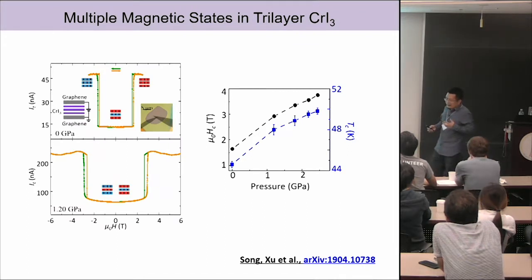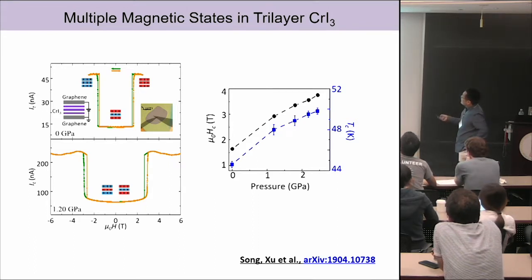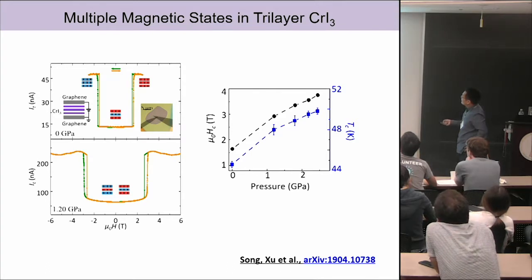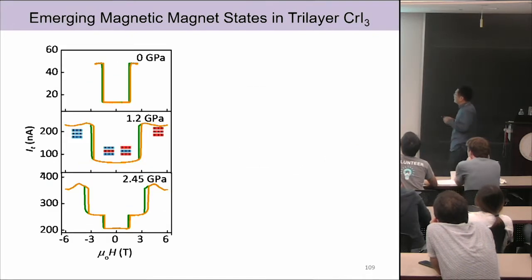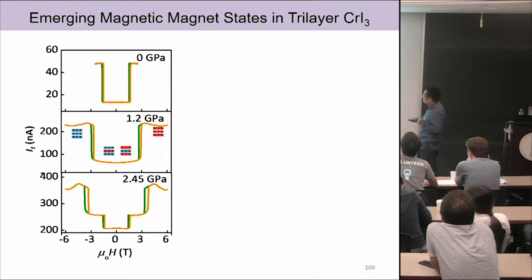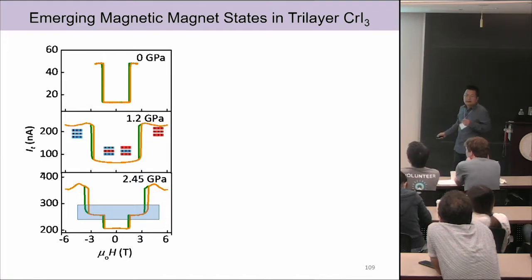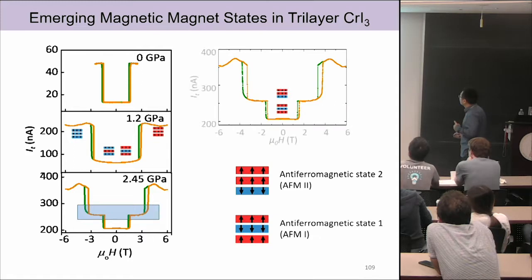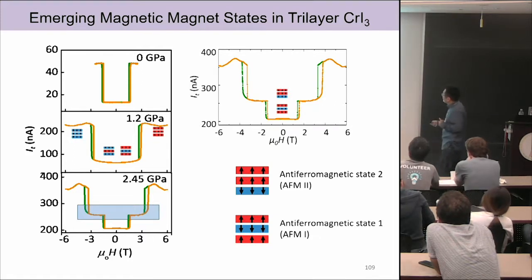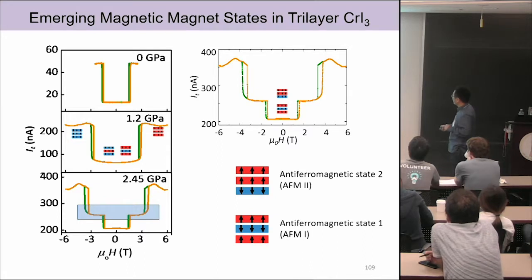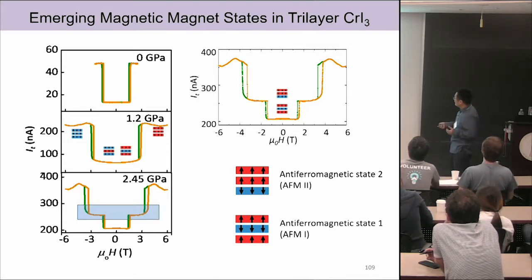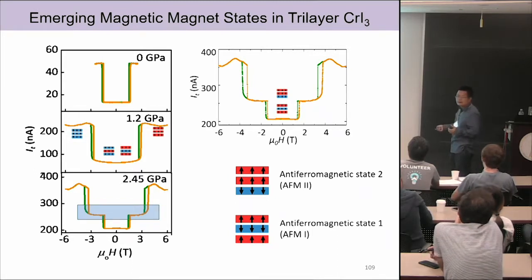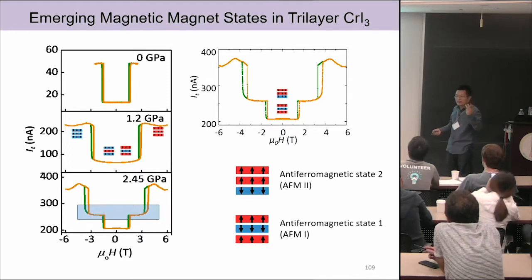In the trilayer, at higher pressures we observe intermediate states appearing — a new magnetic state at higher pressure. This new state comes from another antiferromagnetic configuration. I define two types of antiferromagnetic states: AF1 is the one I already described, with two antiferromagnetic interfaces — spin-up, spin-down, spin-up — just like the natural crystal.